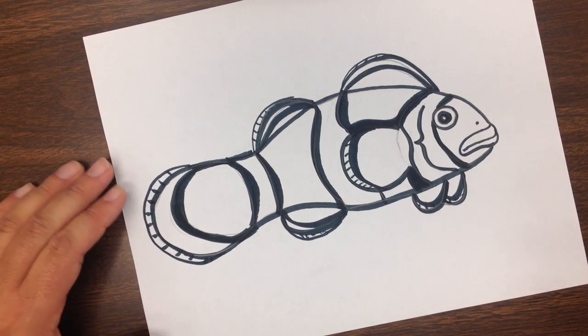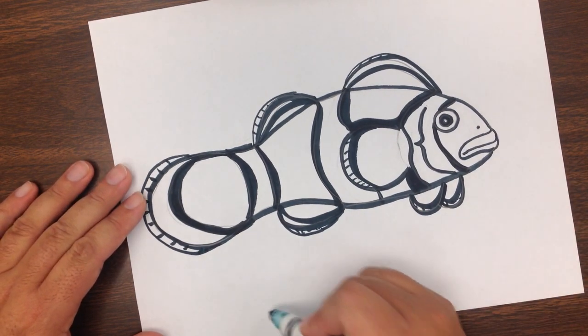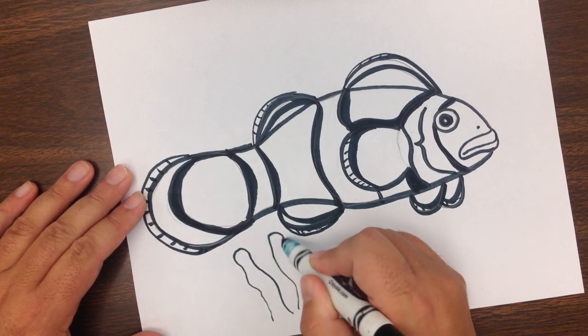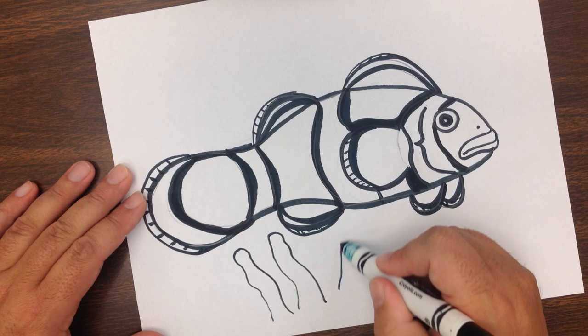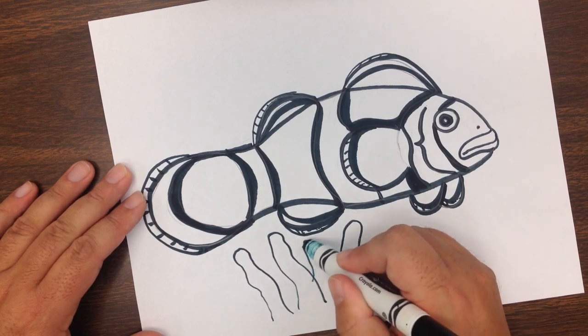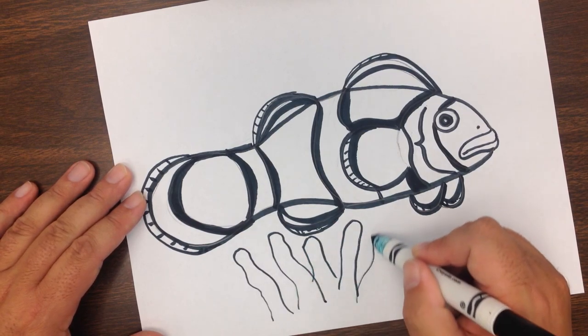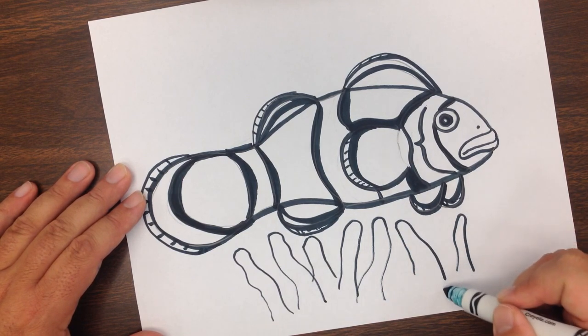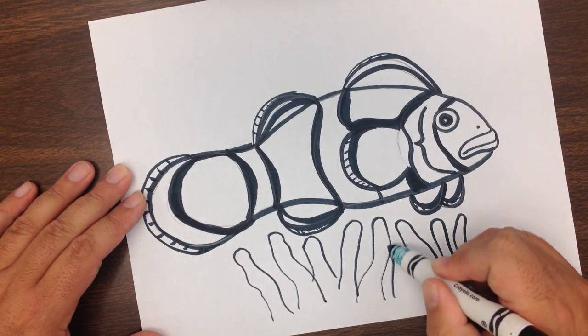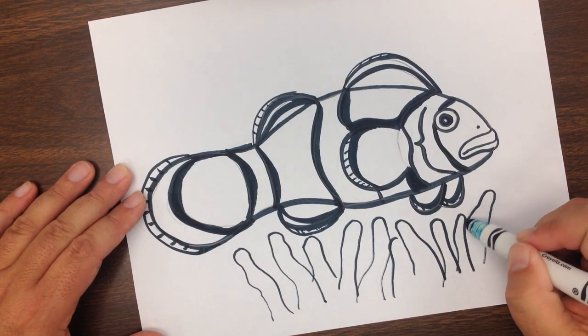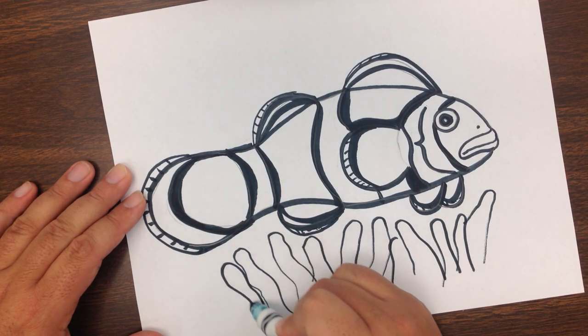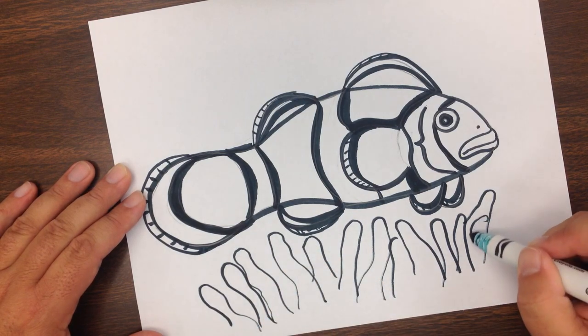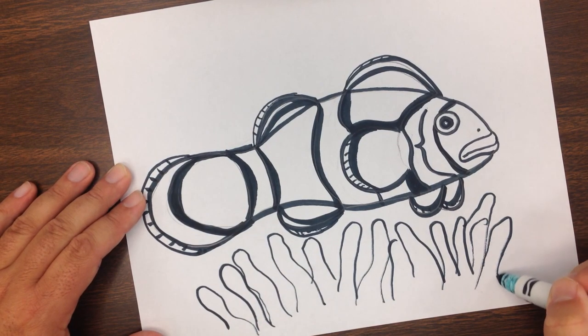And one thing you might want to do is go ahead and put the anemone here just to kind of make it look natural and make our fish look like he's at home. We have the tentacles of the anemone just kind of waving around underneath.